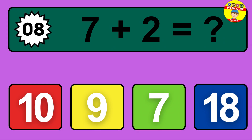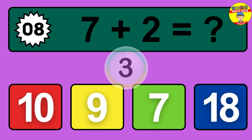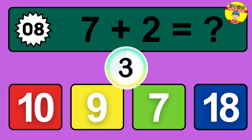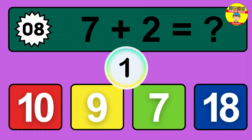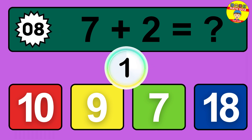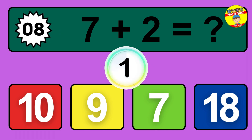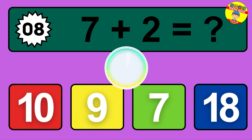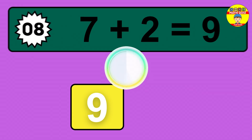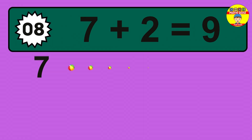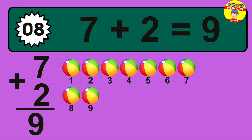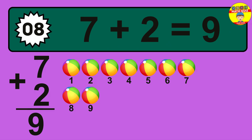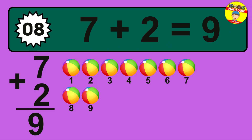Question 8. 7 plus 2 equals what? So the answer is 7 plus 2 is 9.